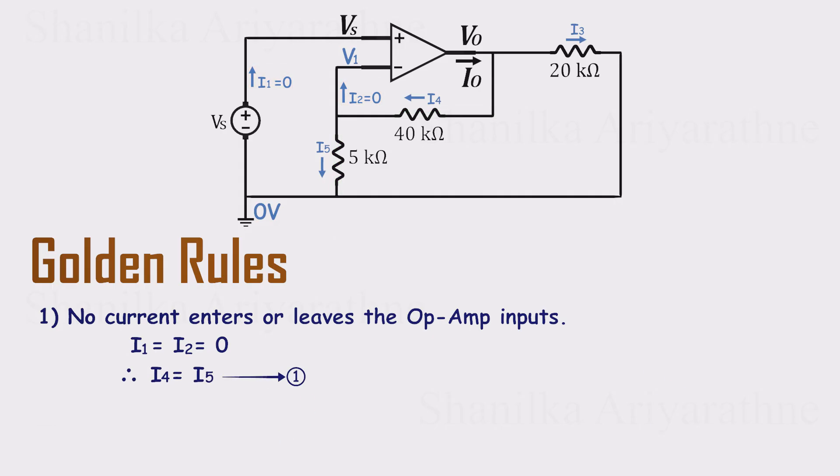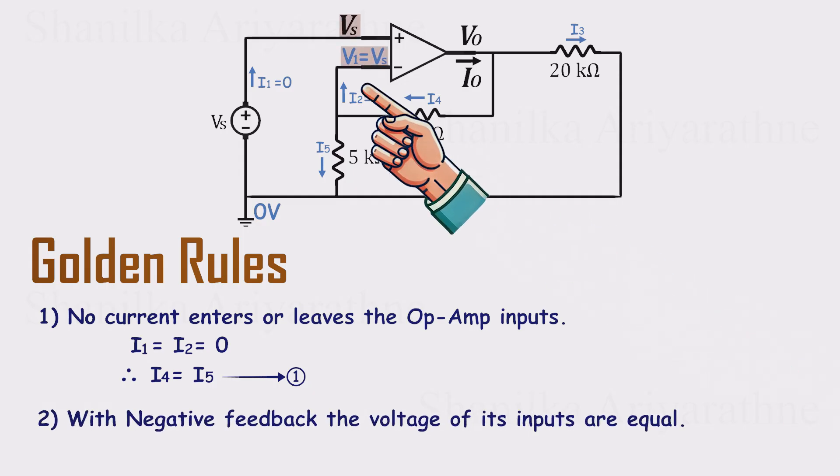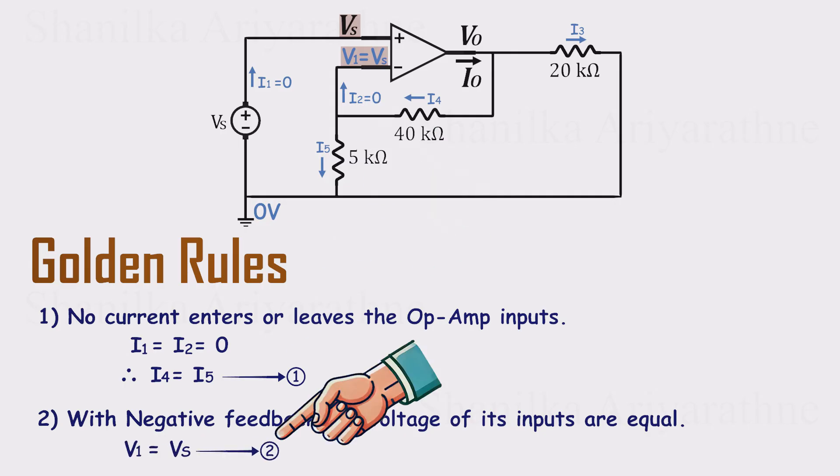Golden rule 2, with negative feedback, the op-amp drives its output until the inverting and non-inverting inputs sit at the same voltage. So V1 equals VS. That's our second relationship.